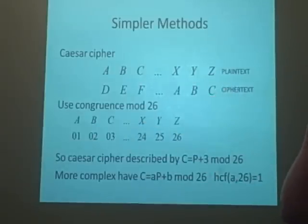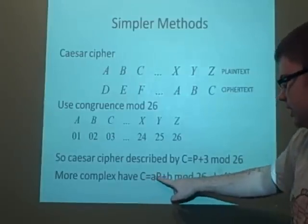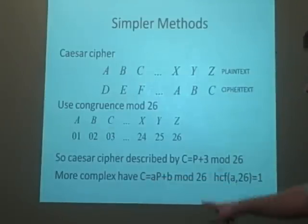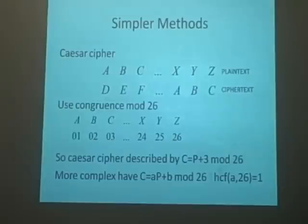And more complex ones, they use a multiplication as well, so we have c equals a times p plus b modulo 26, where the highest common factor of a and 26 is 1. So it's usually a prime number.